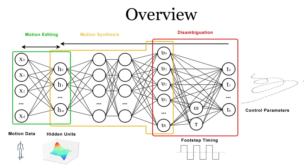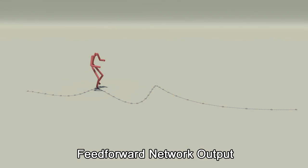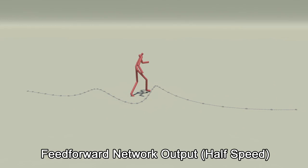We therefore train a small neural network to disambiguate the input trajectory using the contact information. After this, the raw output from the feedforward network is very fast to compute, but may not exactly follow the trajectory and may exhibit other issues such as foot sliding or variations in joint lengths.